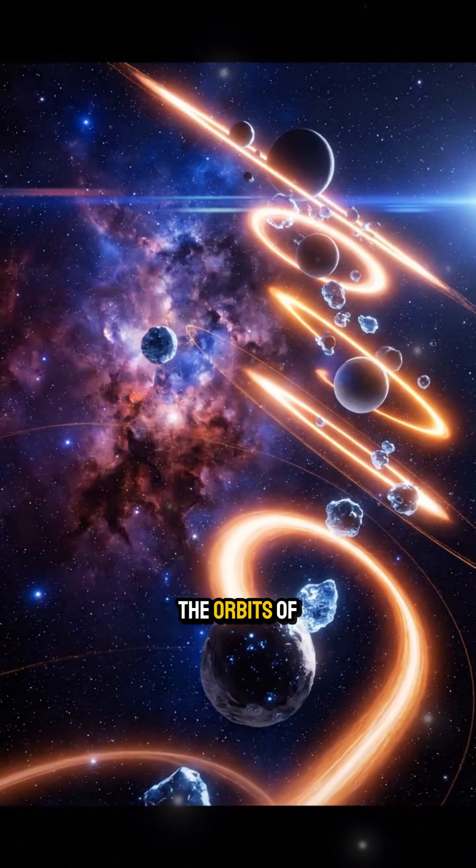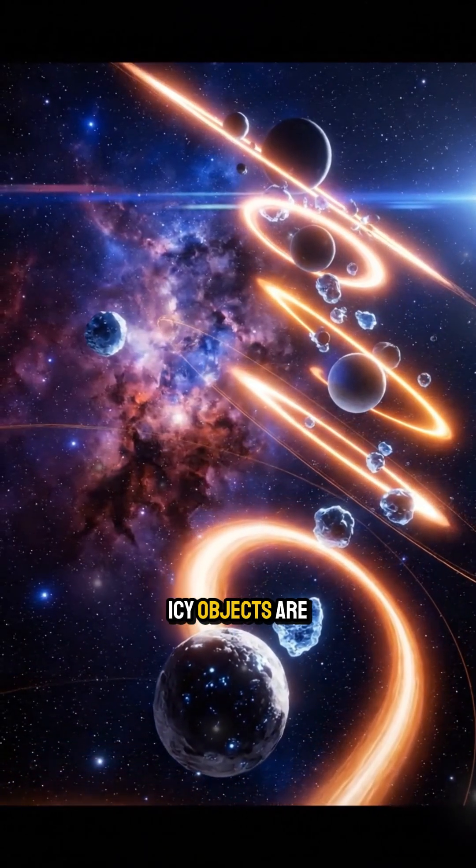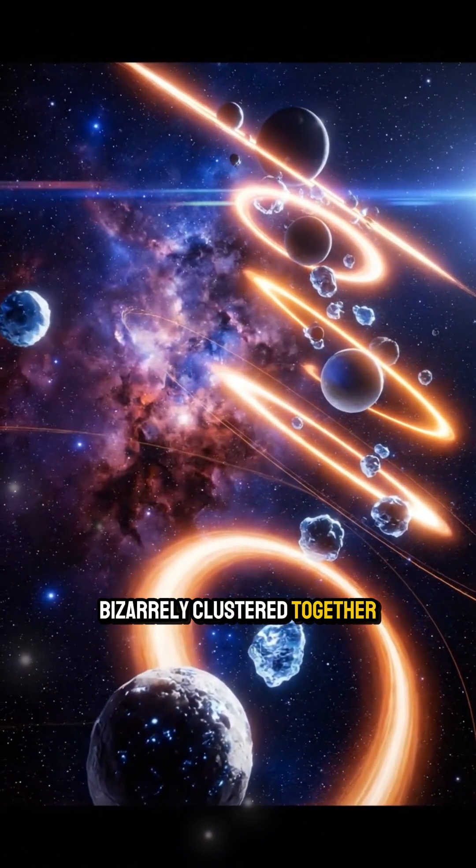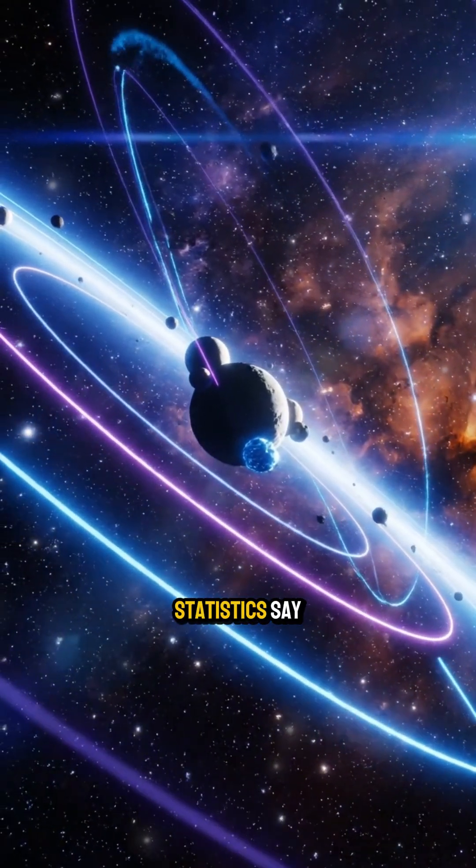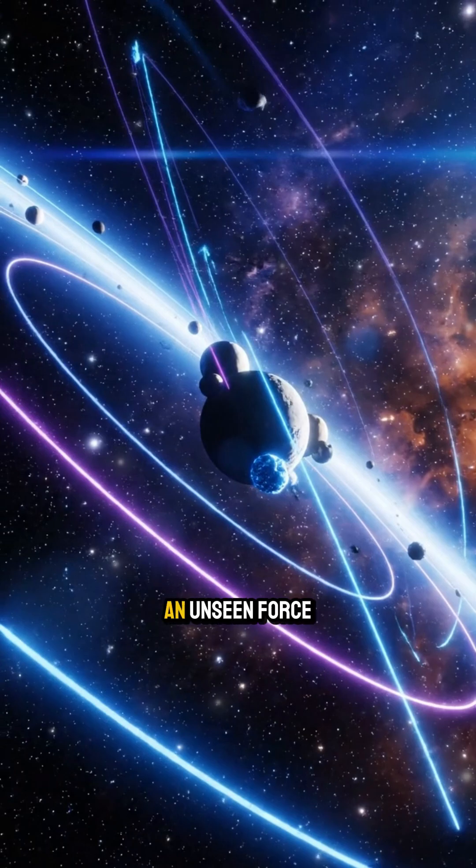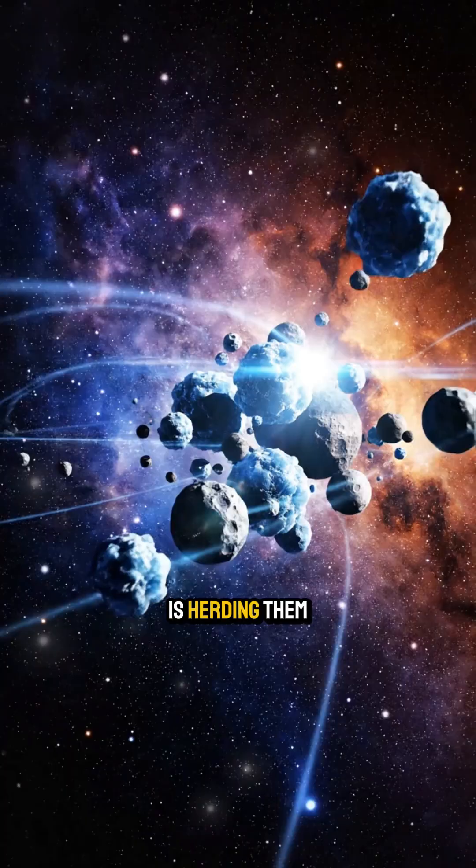Astronomers notice that the orbits of distant icy objects are bizarrely clustered together. They are all tilted and grouped in a way that statistics say is almost impossible. It's as if an unseen force is herding them.